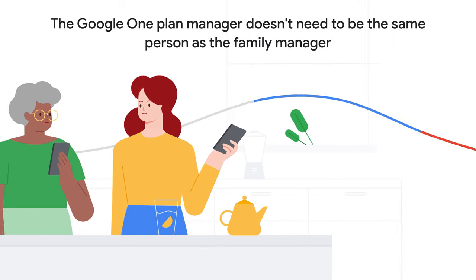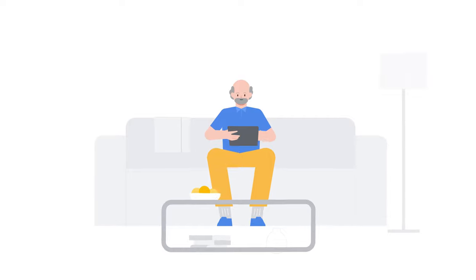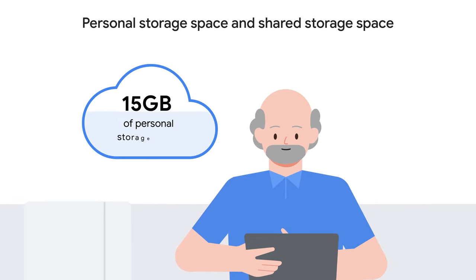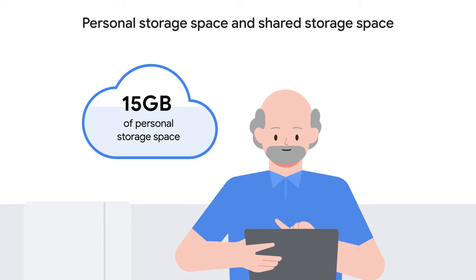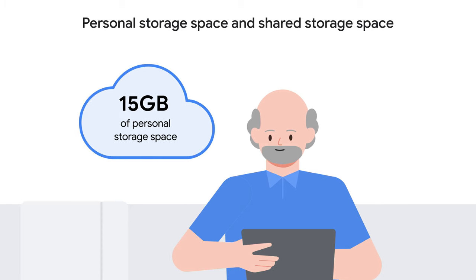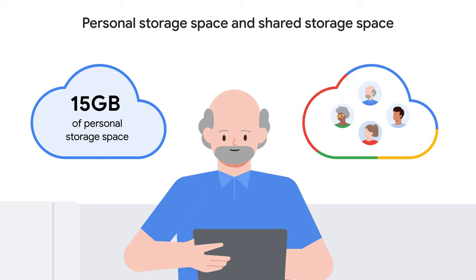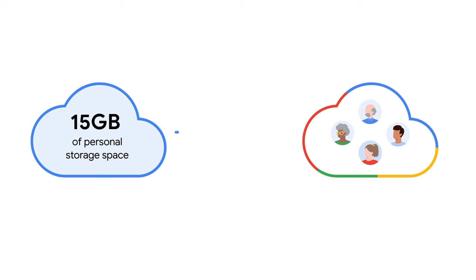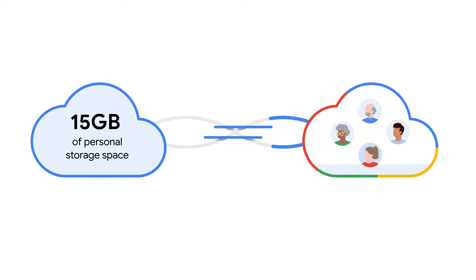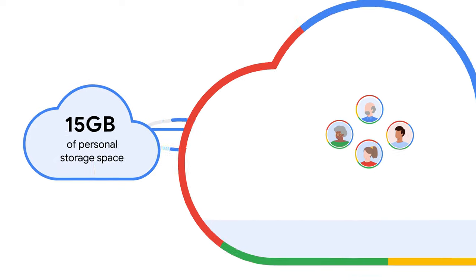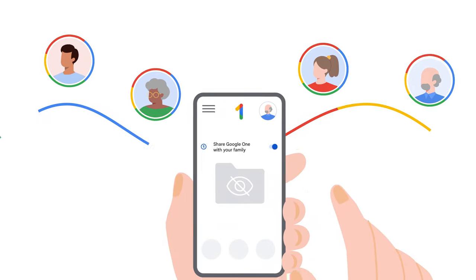There are two kinds of storage space: personal storage space and shared storage space. Each member of the family group gets 15 gigabytes of personal storage space for their files. A family member's files fill up their personal space first. There's also shared storage split between everyone in your family group. After a family member's personal storage gets filled up, their files count toward the shared storage space. Family members can use as much of this available storage as they want.